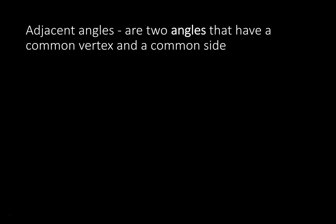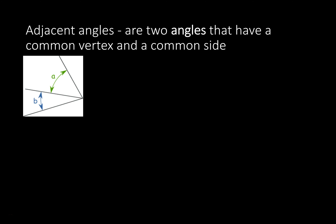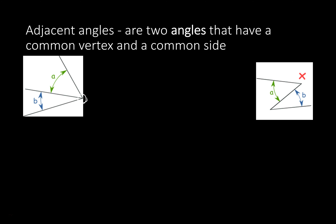Adjacent angles are two angles that have a common vertex and a common side. It would look something like this — two angles with a common side, a common vertex. This is one that would not have a common vertex but a common side, so that would not be an adjacent angle.